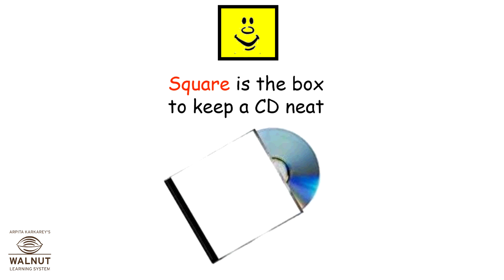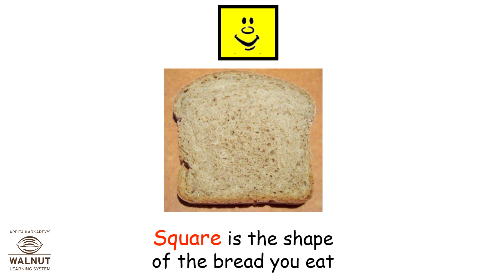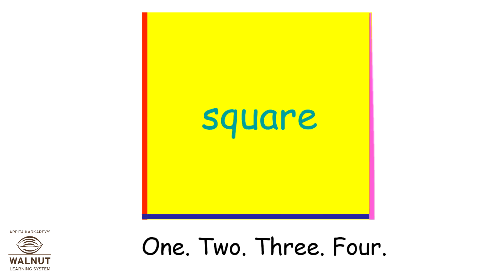Square is the box to keep a CD neat. Square is the shape of the bread you eat. One, two, three, four.